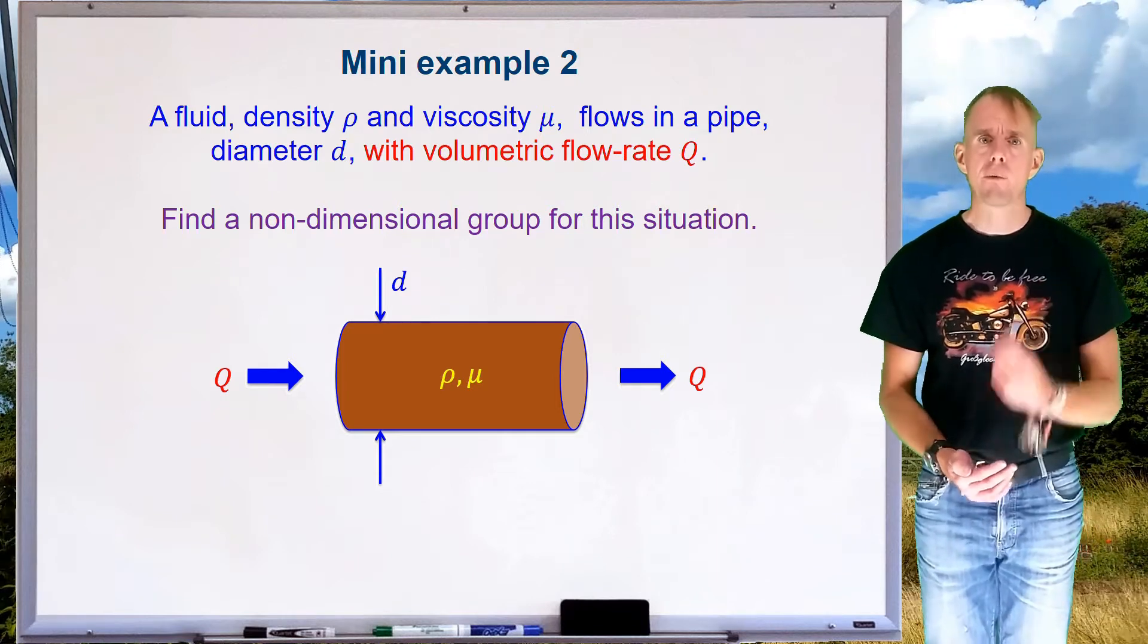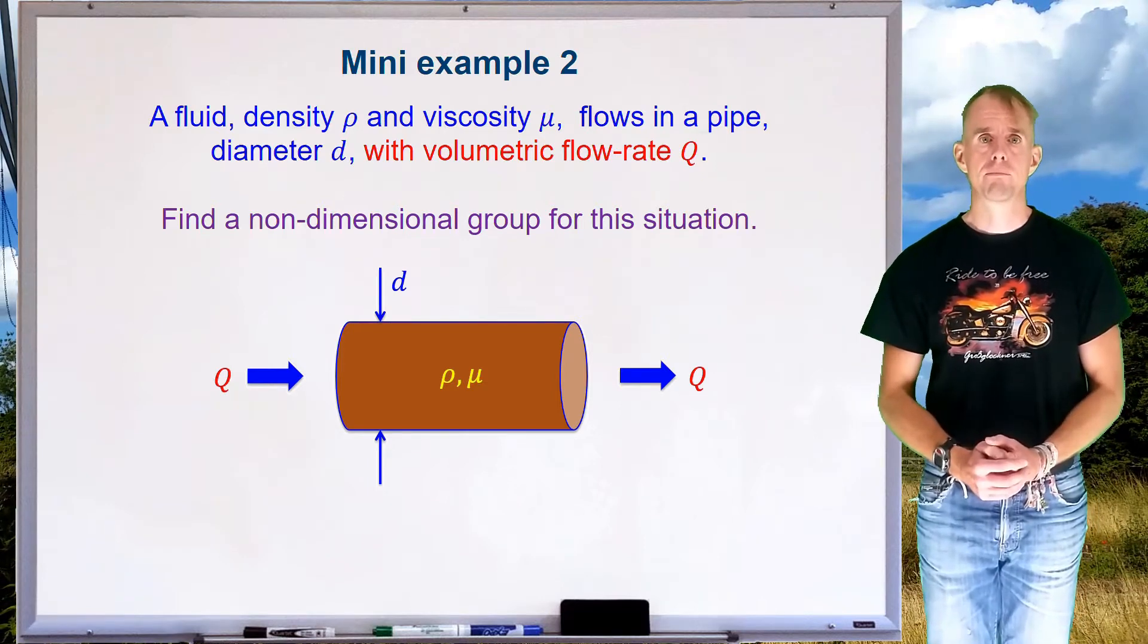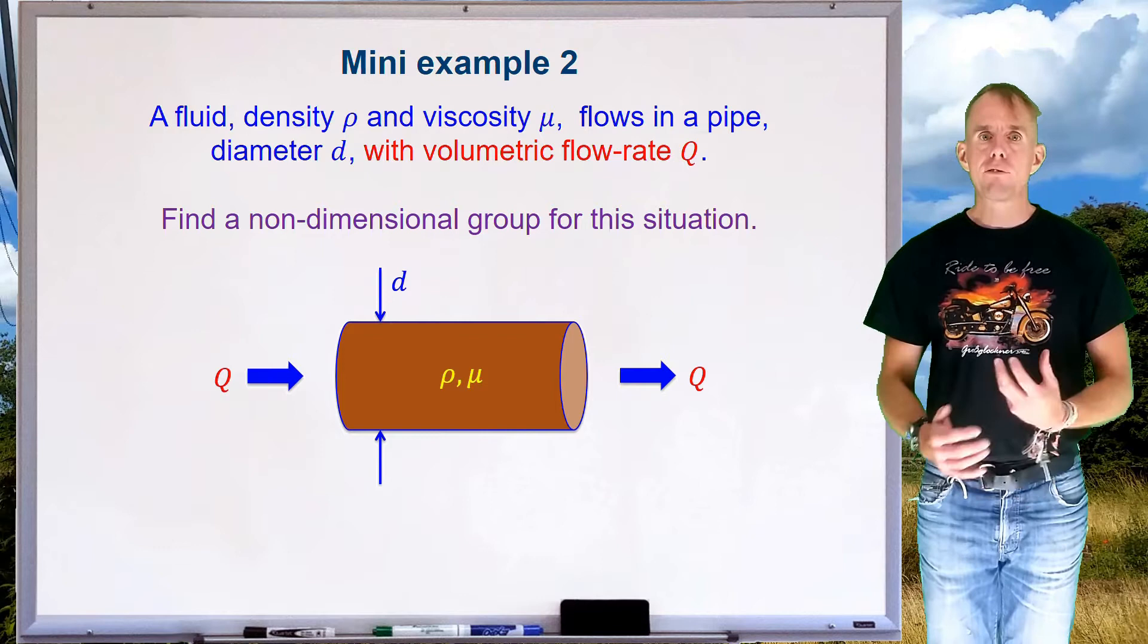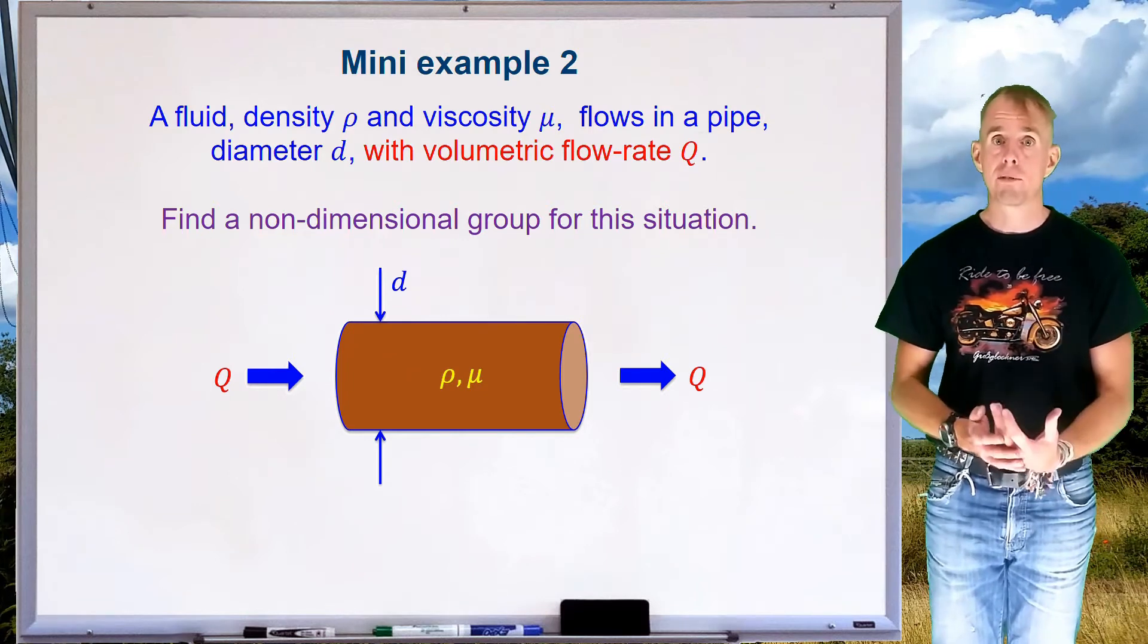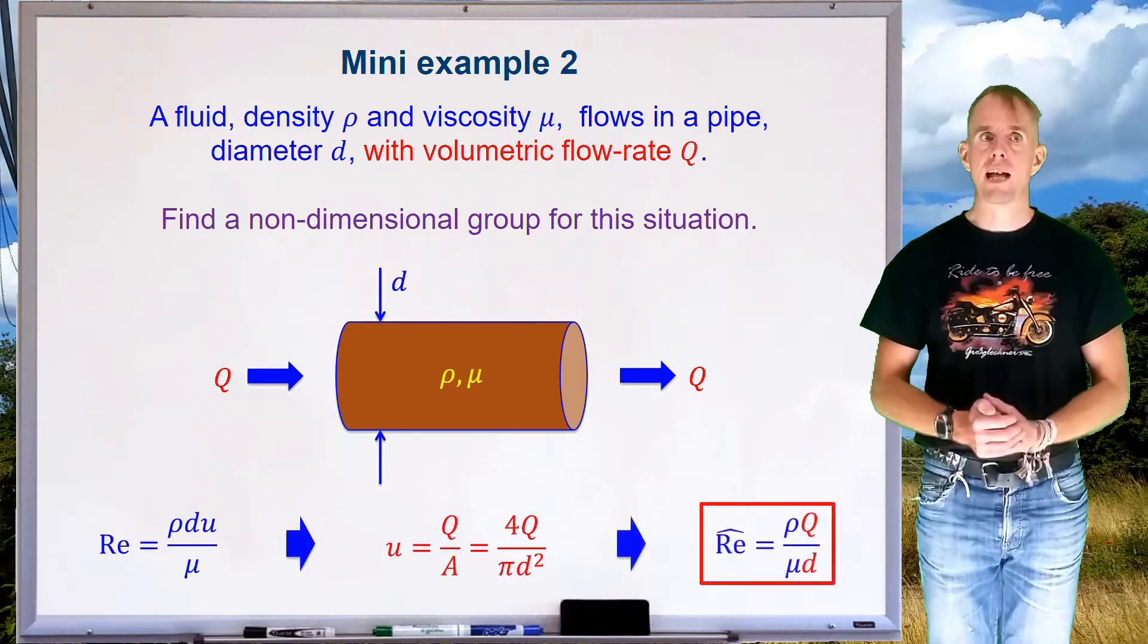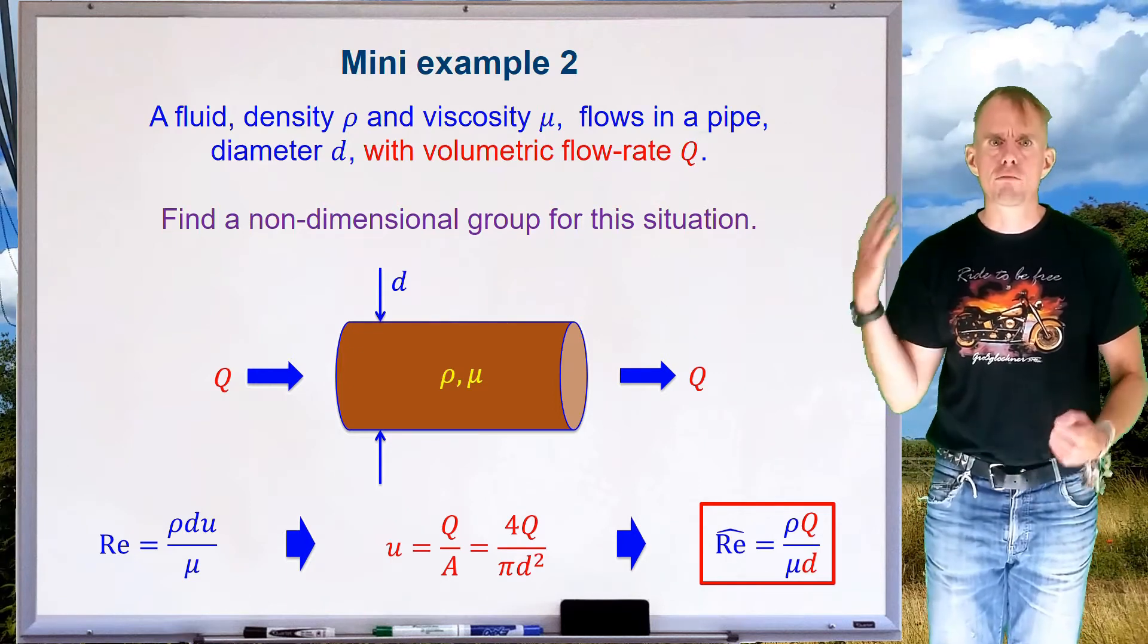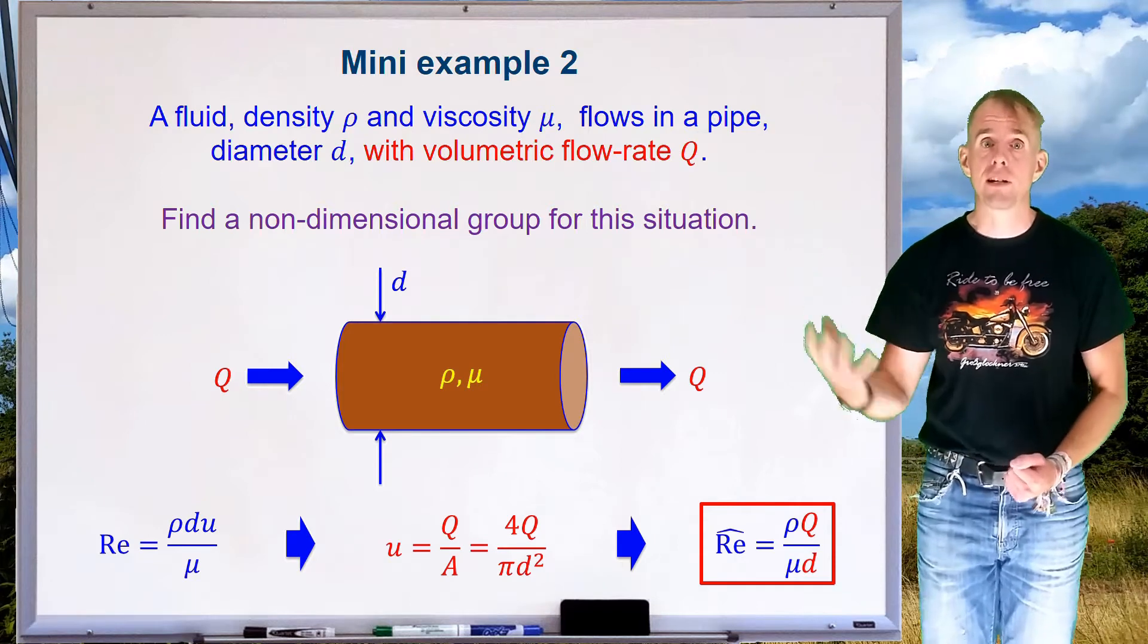All that's changed is how we're measuring the quantity of fluid. Therefore, if the physics hasn't changed, Reynolds number is still going to be an important group for this problem. The question you should be asking yourself is, well, I know from intuition, from engineering sense, that this problem has a Reynolds number associated with it. I haven't got a velocity. How do I get a velocity? We can see that we've got a volumetric flow rate, we've got a pipe diameter, and so using the pipe diameter we can get a cross-sectional area, and if we divide volumetric flow rate by cross-sectional area, we, of course, get a velocity.